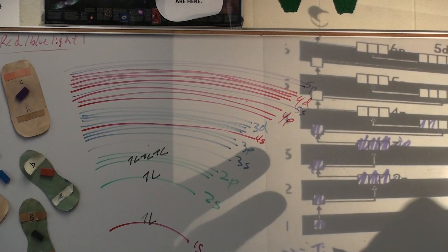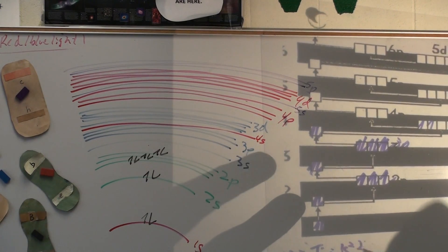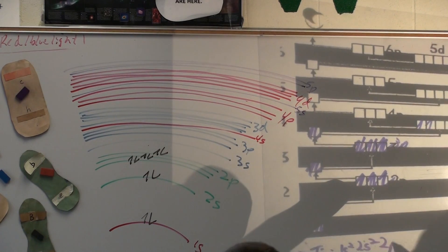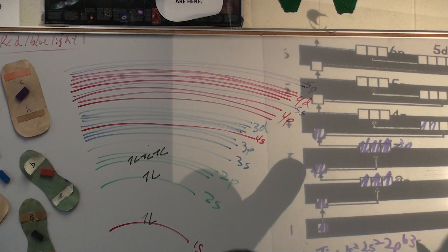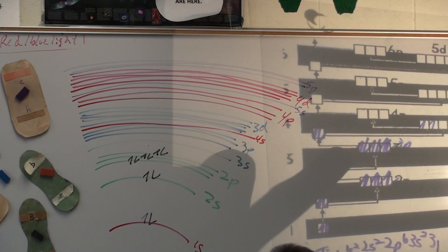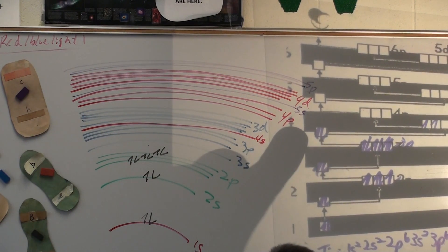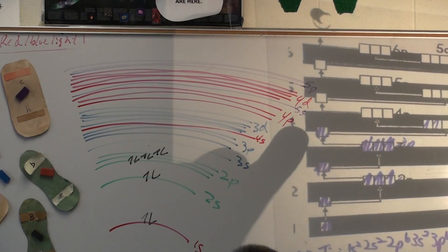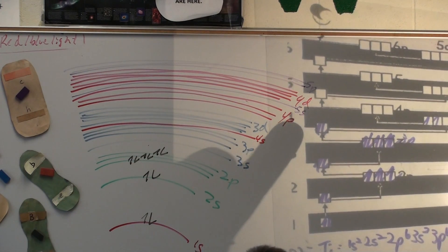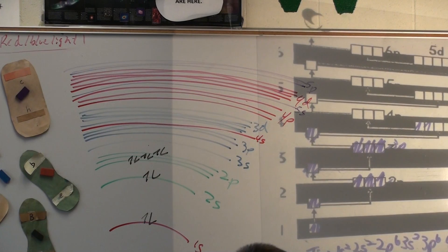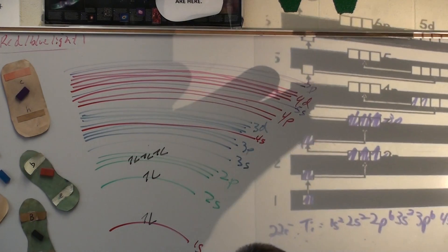How you write this is 1s2, 2s2, 2p6, 3s2, 3p6, 4s2, and then 3d2. So you write the 4s and then 3d? Yep. Write them in the order of your energy. You can write them out of order. They're all right, you can read them.